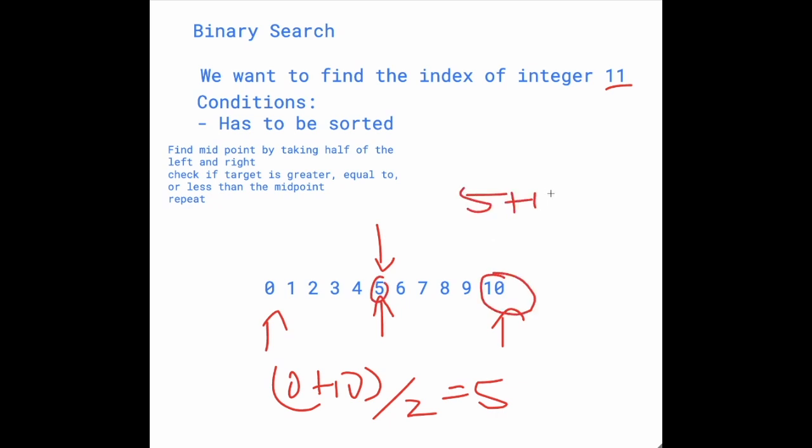So 5 plus 10 over 2. So we get 7. And so this is basically our new midpoint. And we're just going to repeat that.